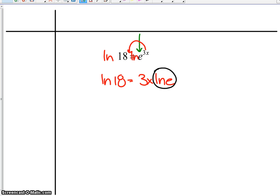Now, we just talked about that. Natural log of e. That's equal to one. So what I really have here now is natural log of 18 equal to 3x times 1, or just 3x. Now it's simple. Divide by 3.